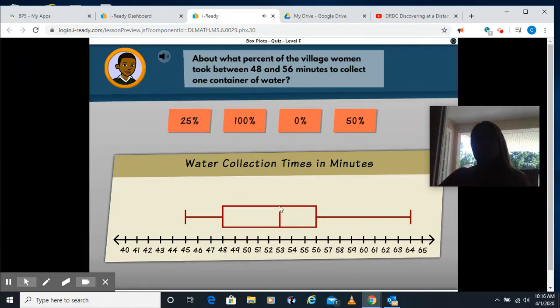All right, so it's asking what percent is this area here from 48 to 56, where we created our box here. Remember, this section is 50% of the data, from here to here is 25% of the data, and from here to here is 25% of the data, making a total of 100% of the data, so this area right here is going to be 50% of our data.